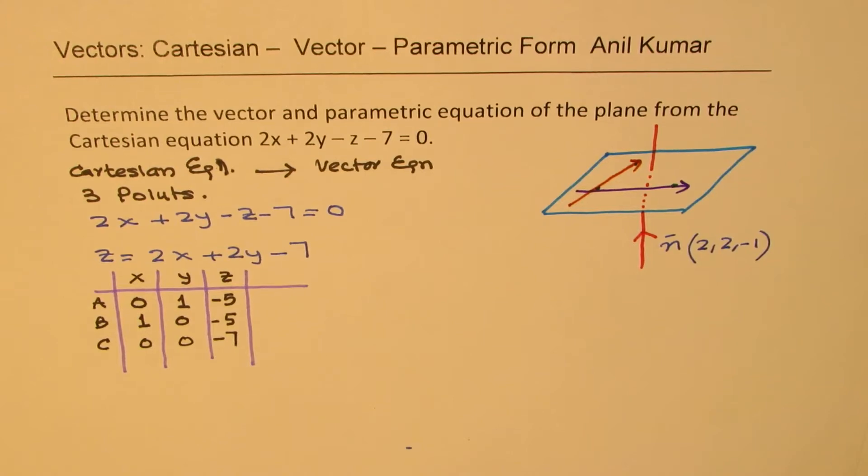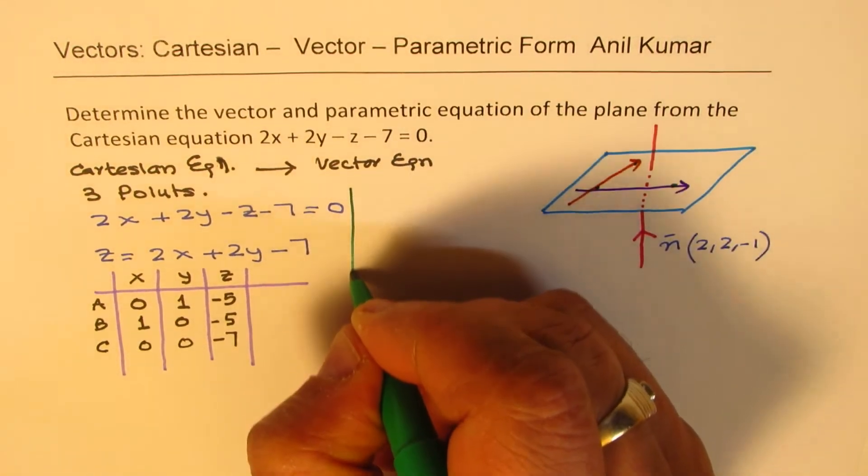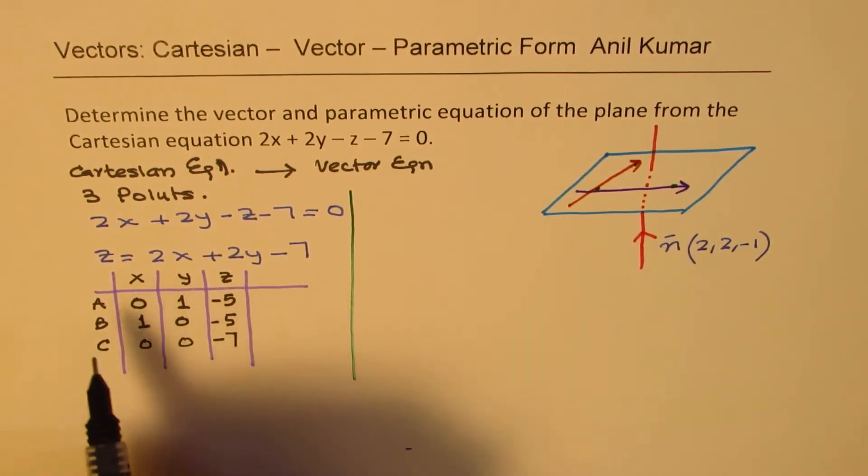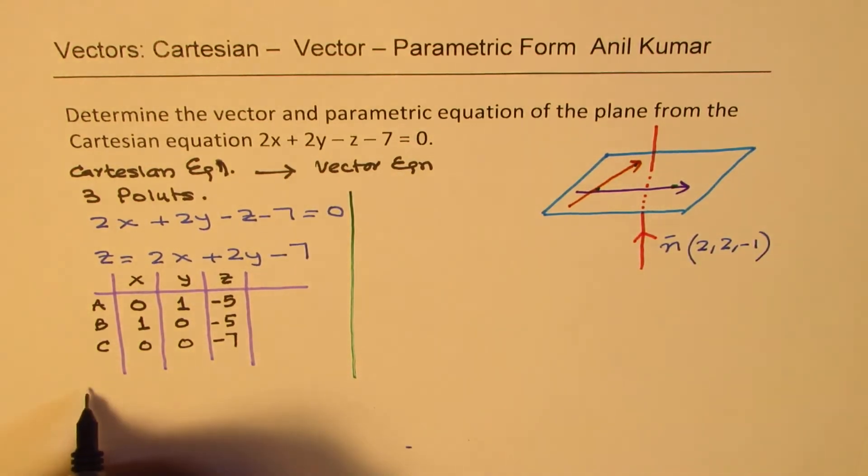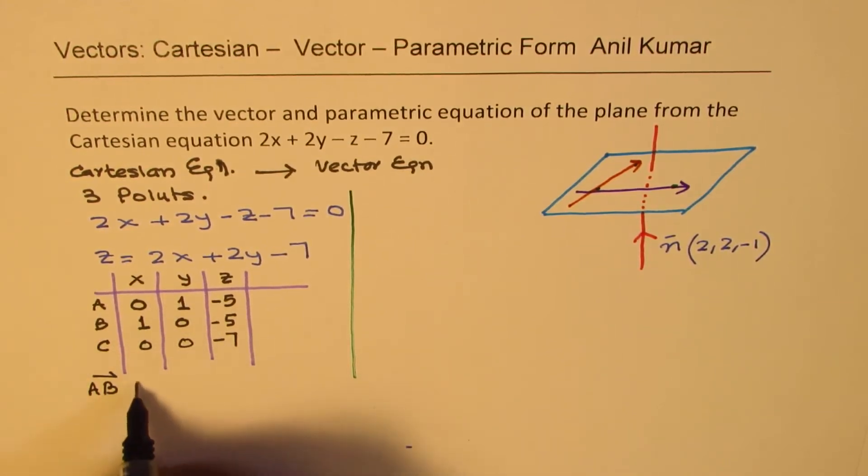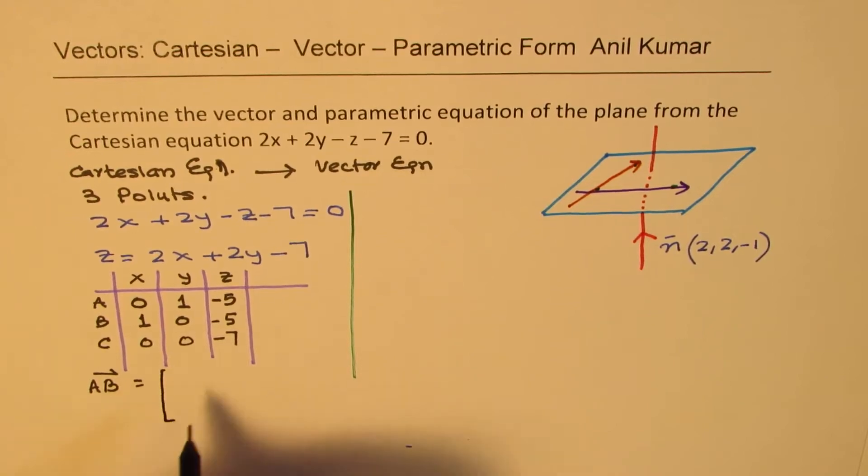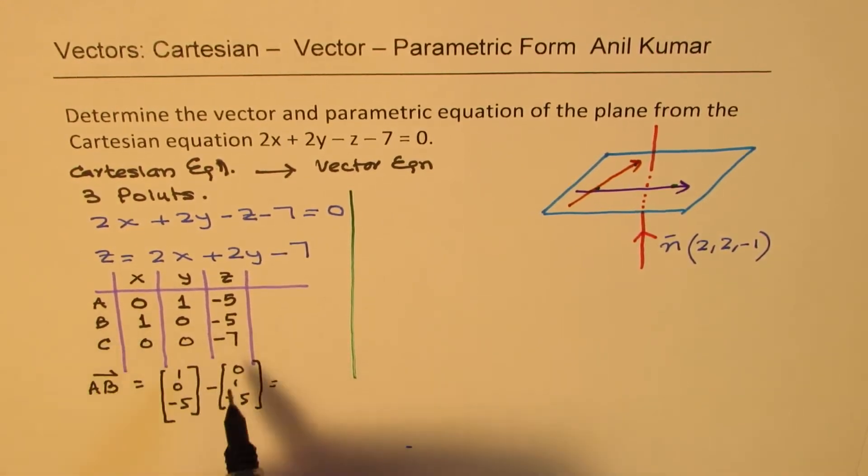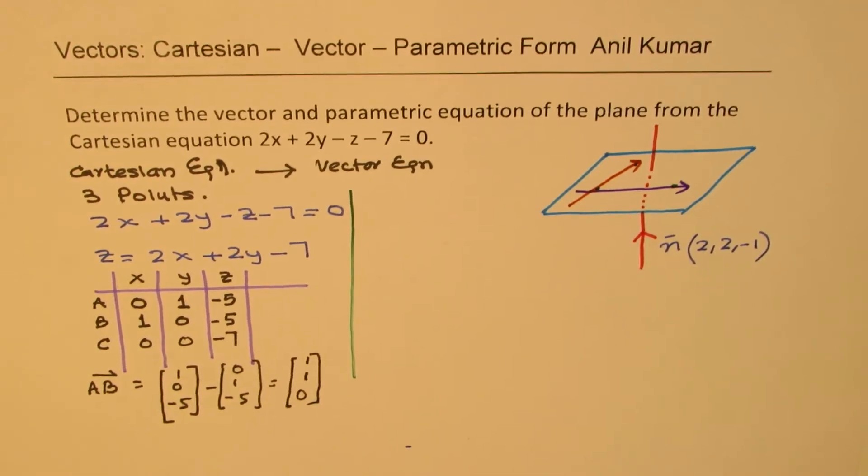So, now we have three points. With the help of these three points, we can find two directions. And from those directions, we can get the vector equation. So, let's find the two directions. So, what is the direction, a to b? So, it will be b minus a. So, b is 1, 0, minus 5. And from there, we'll take coordinates of a, which is 0, 1, minus 5. So, a to b is 1, 1, and 0.